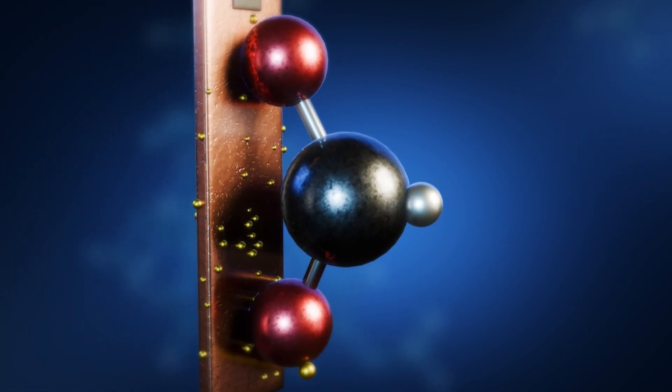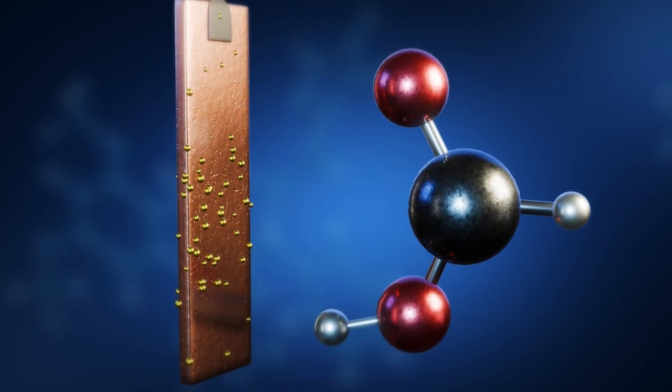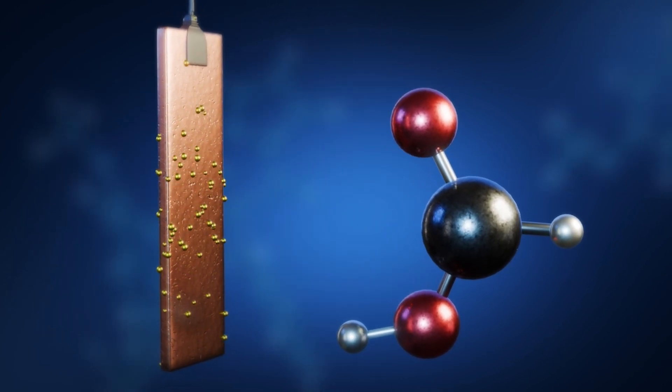electrons are transferred directly from an electrode to carbon dioxide molecules close to its surface. This reduces the carbon dioxide molecules, priming them for chemical reactions that convert them into useful products.